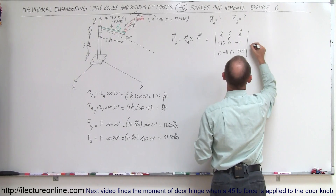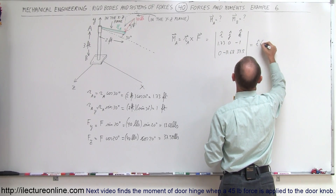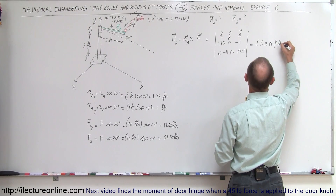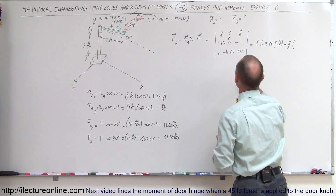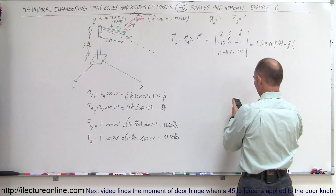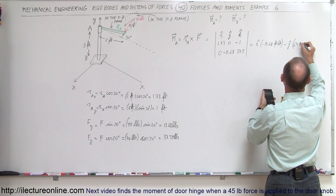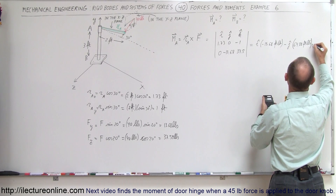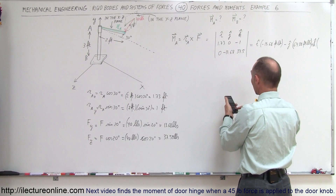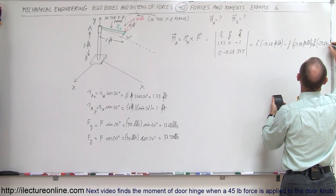Now we can work this out. In the i direction we have 0 minus negative 13.68, so that's negative 13.68 foot-pounds. Minus j times 1.73 times 37.5 minus 0, which is 64.88 foot-pounds — negative due to the minus j. Plus k times 1.73 times 13.68, which is 23.67 foot-pounds. Those are the three components of the moment relative to point A.